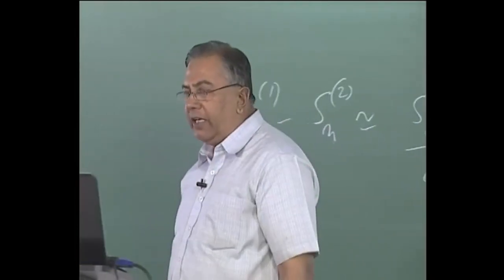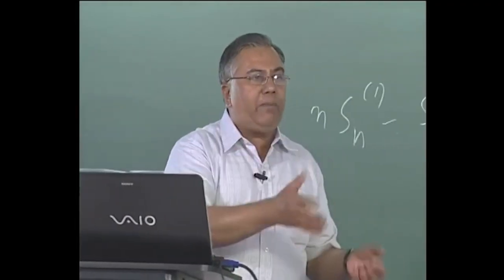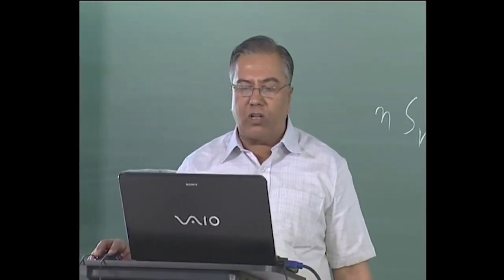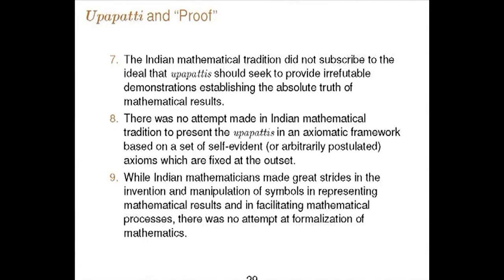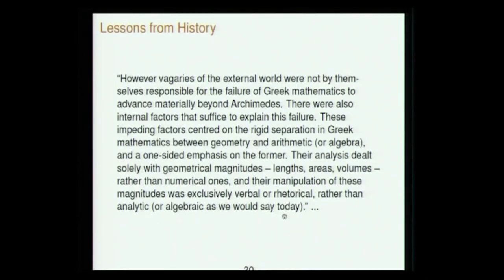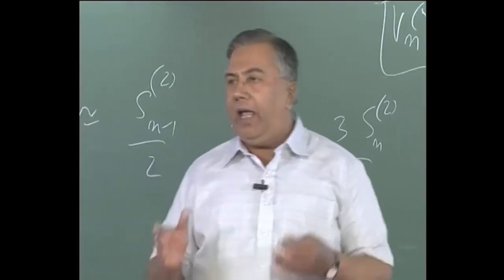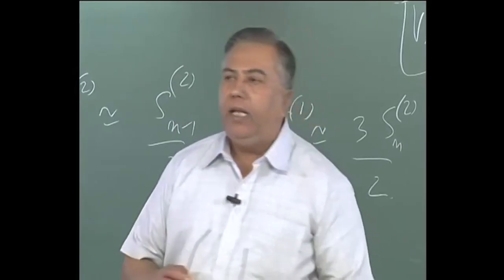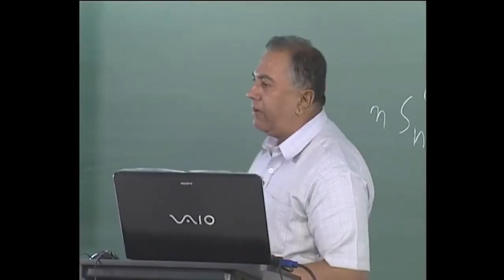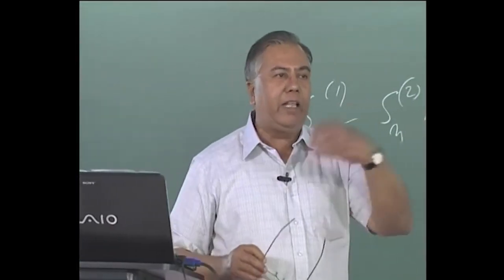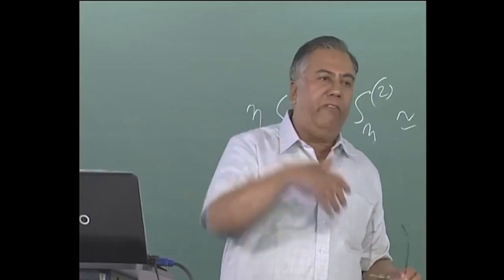Crucially, Upapathi may involve observation or experimentation and depends on the prevailing understanding of mathematical objects. It is not purely formal, abstract, or non-empirical. In that sense, mathematics was not thought of as a non-empirical science in India. Mathematical results had no higher level of validity than results in other disciplines where observational validity matters. There are no known Upapathis in Indian mathematics that establish existence of a mathematical object purely by contradiction — the constructivist approach prevails. There is also no claim that Upapathis irrefutably prove absolute truth, and no attempt to write down axioms once and for all.